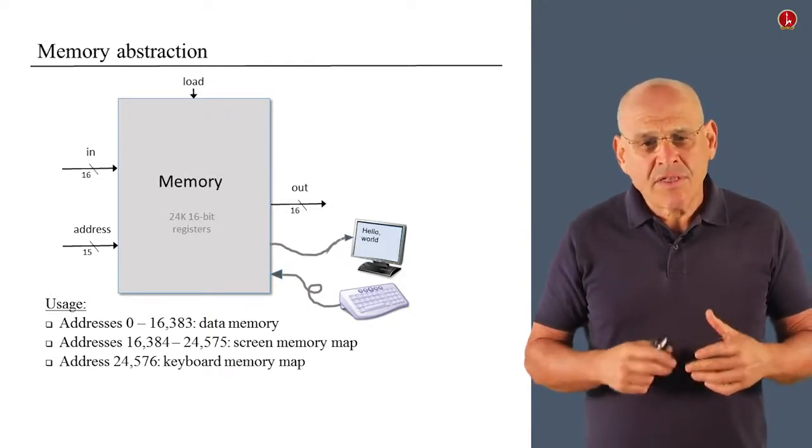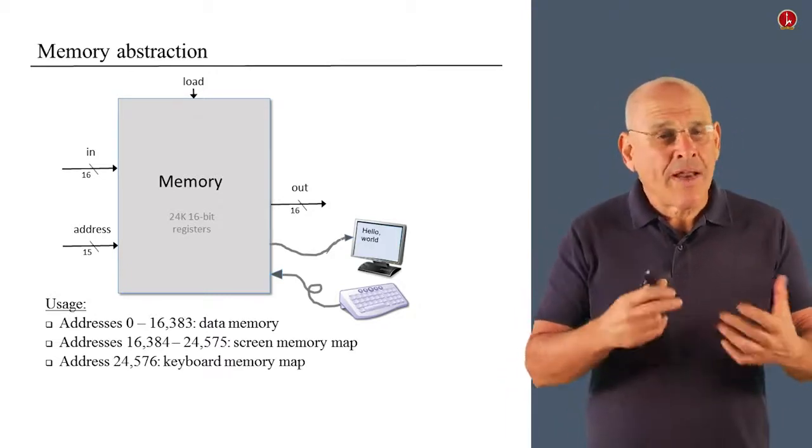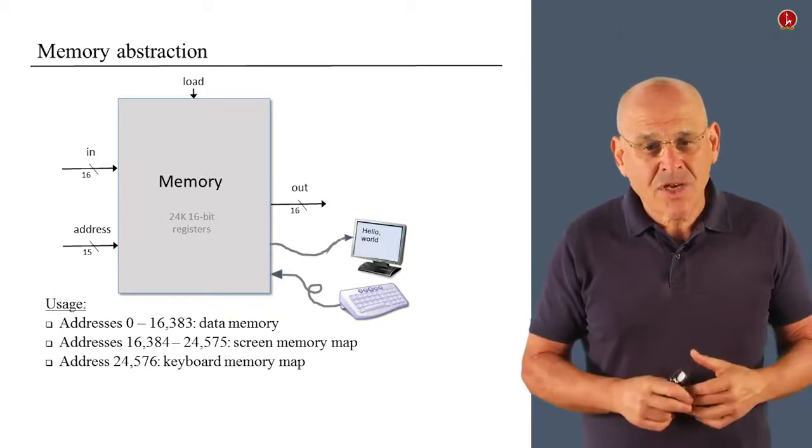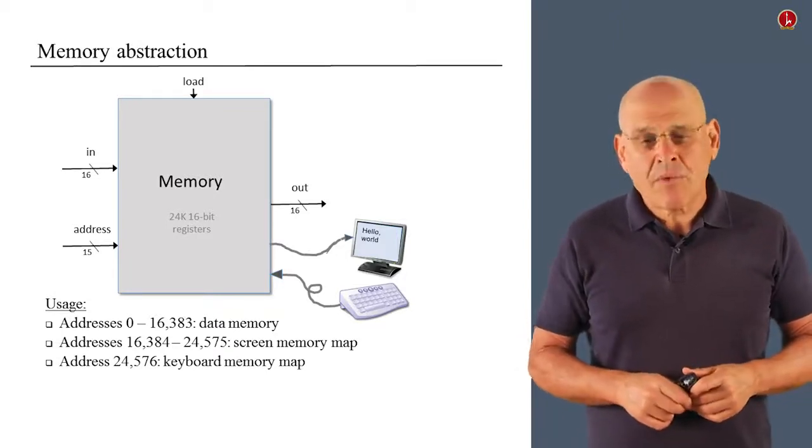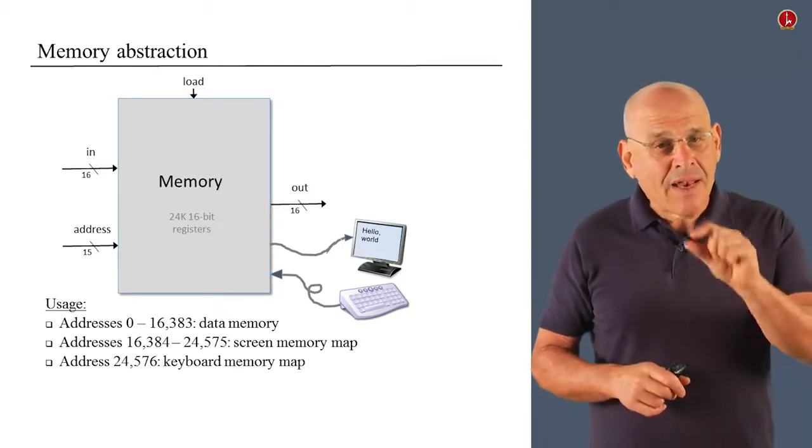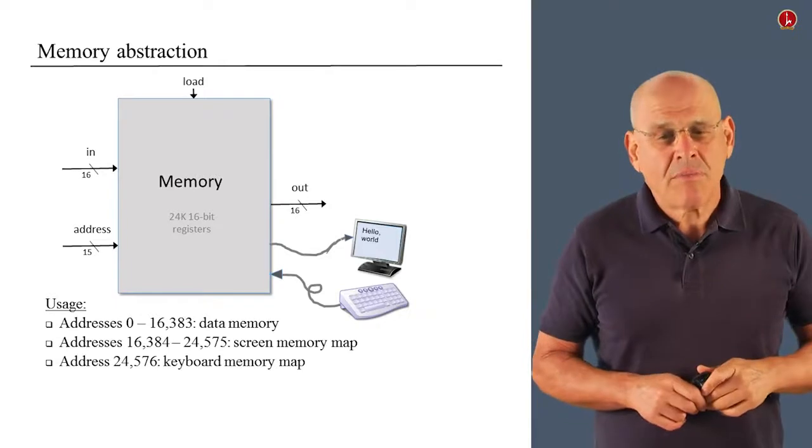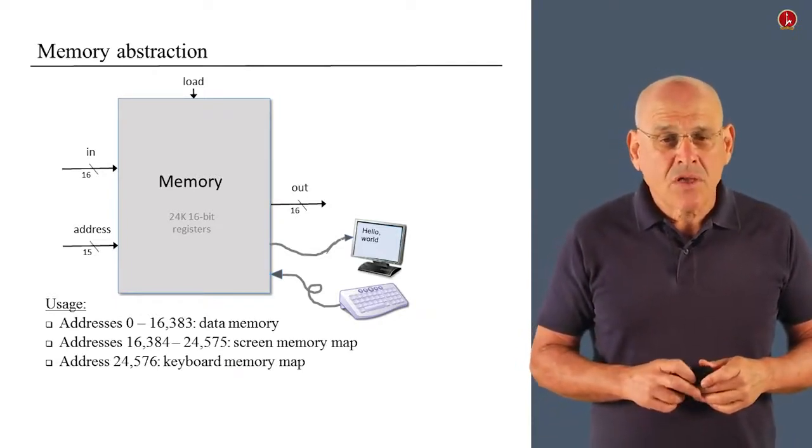So, the first 16K of the memory are dedicated to the running program and the data that it generates. The next 8K of the memory are dedicated to a screen memory map. And the last register in the memory represents the keyboard memory map.